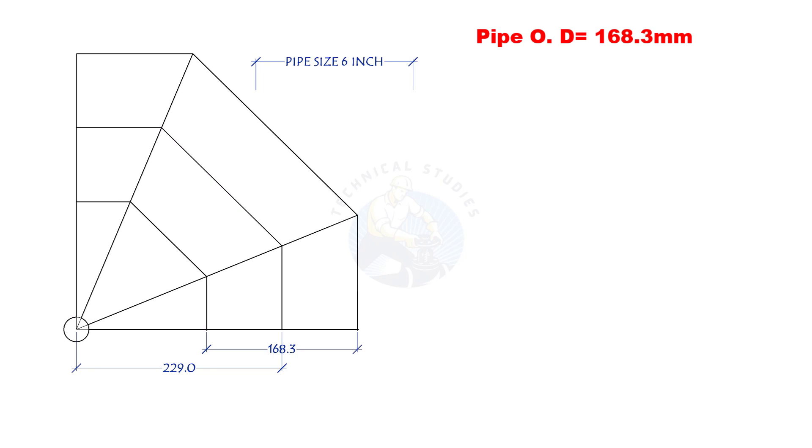This is a 6-inch pipe. The OD of the pipe is 168.3 millimeters. The center radius of the mitre is 229 millimeters, but this formula is applicable for any radius.